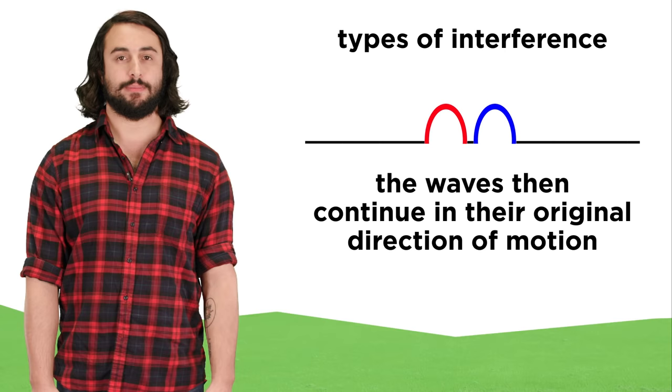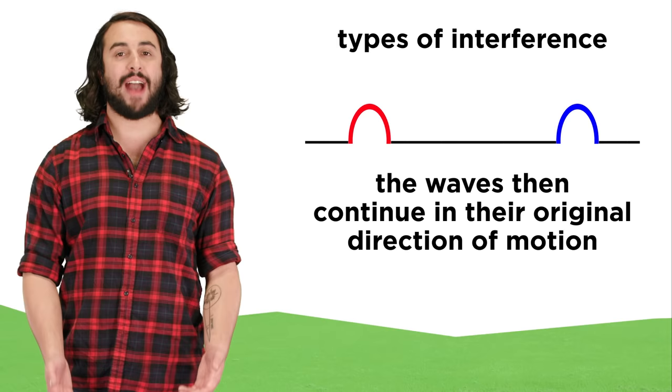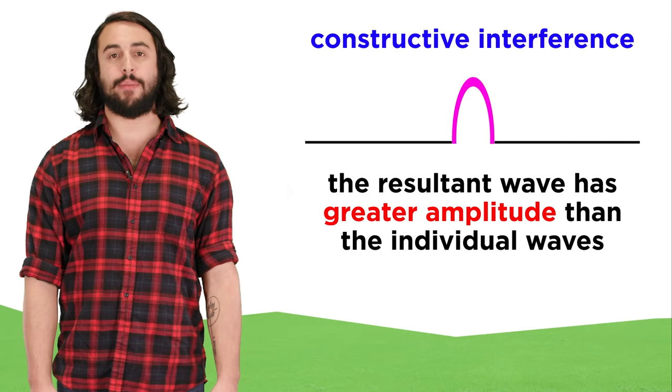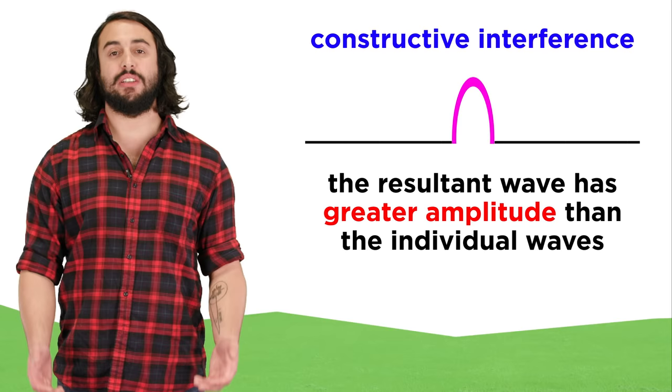Each wave maintains its own characteristics before and after the interference. When a resultant wave has greater amplitude than the individual waves, like this case, this is called constructive interference.